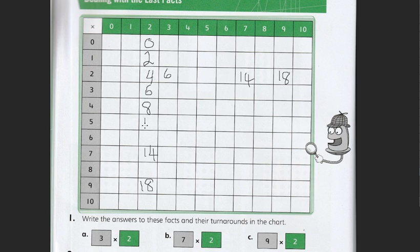5 times 2 is 10. 6 times 2 is 12. 14 is there. 8 times 2 is 16. And 10 times 2 is 20.